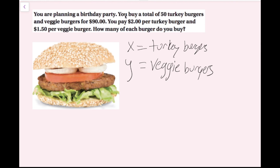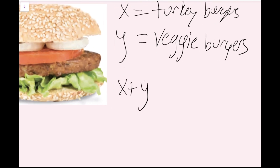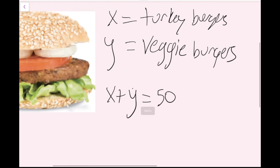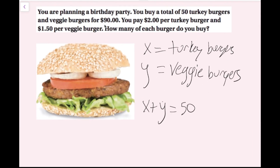Now I just need to write a system of equations to help me solve my problem. Notice that I buy a total of 50 turkey burgers and veggie burgers. To find the total of something, you just add them up. So I just have to add up the two types of burgers I bought, which are x and y. If I add x plus y, I know that's going to equal 50 total burgers. So my first equation is x plus y equals 50.